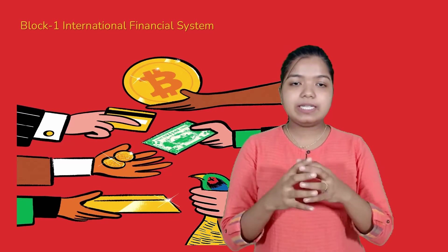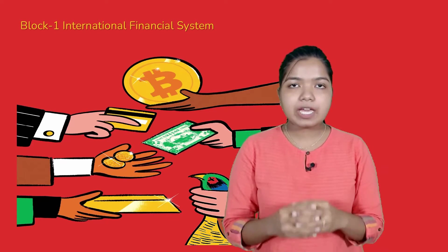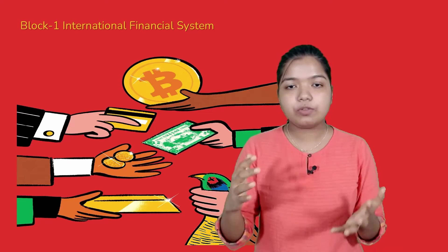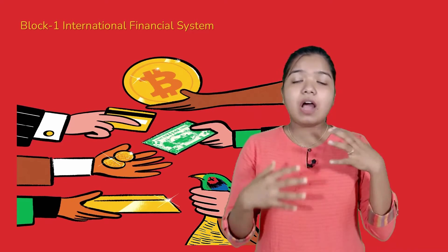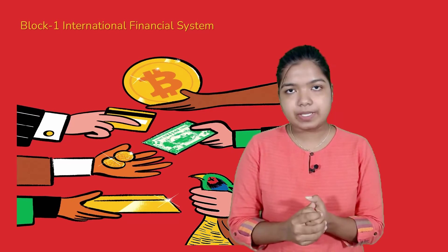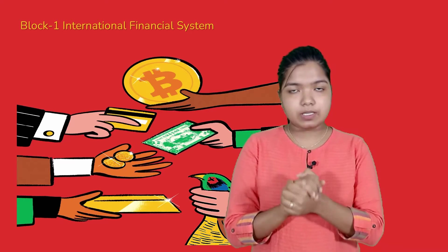In the first block, we come to the International Financial System. The International Financial System covers, in total, markets — international financial markets — international financial agreements, and balance of payments. We need to look at the International Financial System in detail in this block.